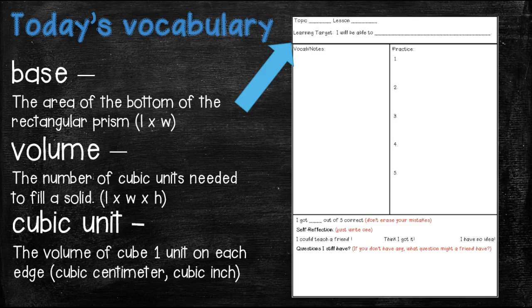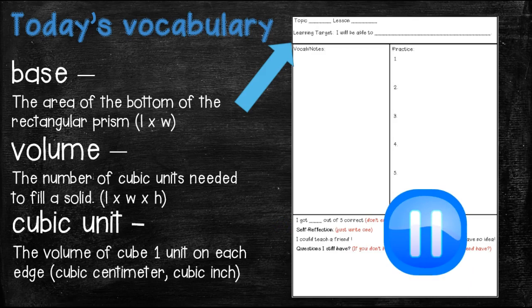And then a cubic unit is simply the volume of a cube, one unit on each edge. It could be a cubic centimeter, cubic inch. But anytime you are answering a question for volume, your label is going to be cubic and then whatever that unit happens to be. Go ahead and pause the video and fill this vocabulary in.